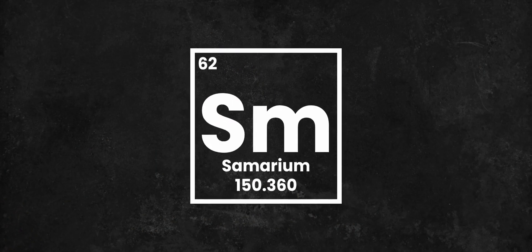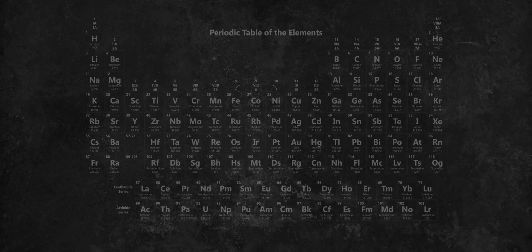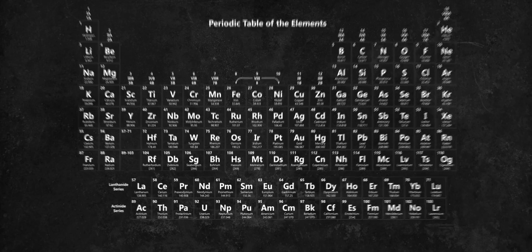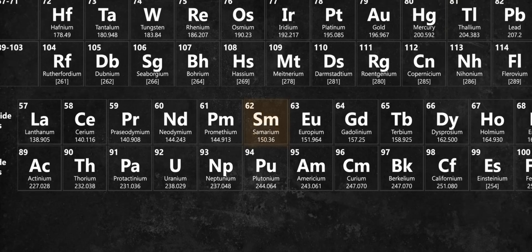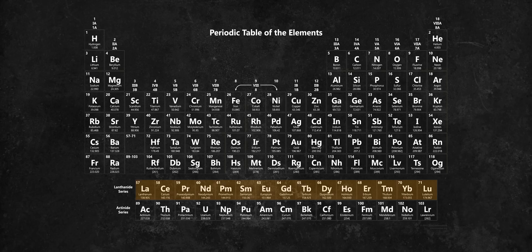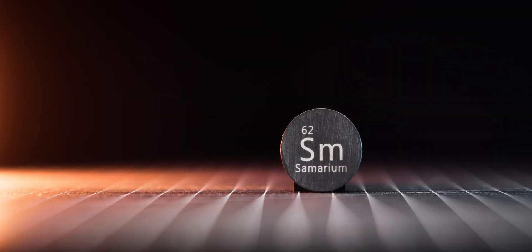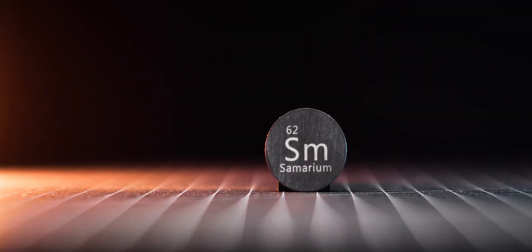Samarium has an atomic number of 62 and it is located between Promethium and Europium in the periodic table. Being a part of the Lanthanide series, it shares many characteristics and properties with other elements in the group. Because of its difficult and expensive production,